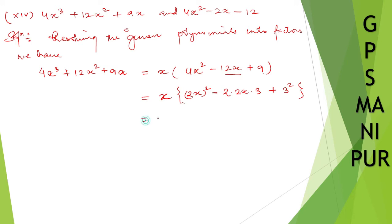Then this one, a² + 2ab + b², I can write down as (a + b)². So x(2x + 3)². Let me take the next one.